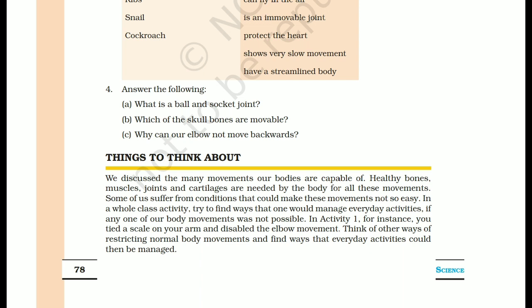Part (c): why can our elbow not move backwards? Because the joint at the elbow only allows back and forth movement. Such a joint is called a hinge joint, like the hinge of a door. Remember to memorize the joints, their functions, muscles' functions, and the movements of different animals — these are the key parts of this chapter.